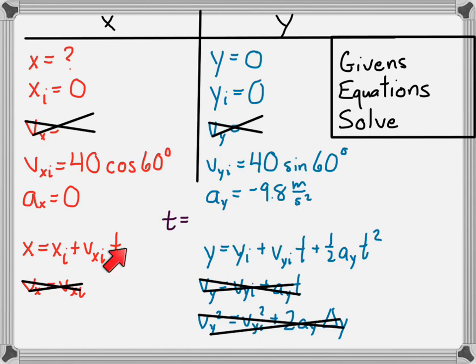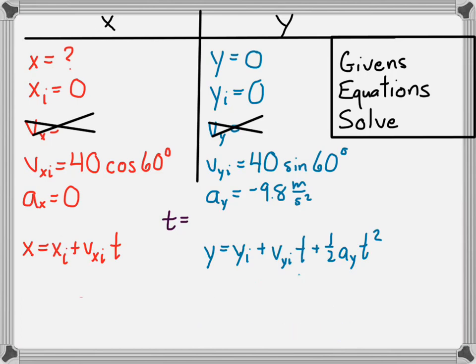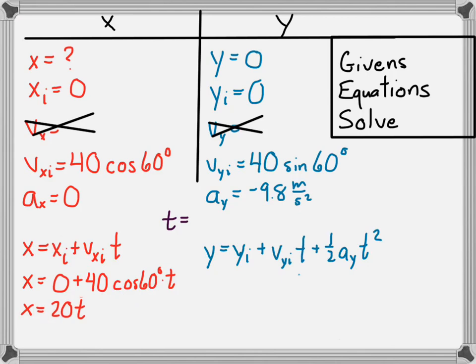We're left with the position equation in x and the position equation in y. Let's solve for the final position of the cannonball. Plugging in what we know: x equals zero plus 40 times cosine of 60 degrees times t. Simplifying, 40 times cosine of 60 degrees gives 20, so final position equals 20 times t. We're stuck because we don't know t — but just like the horizontal projectile case, we can use the y equation to find it.